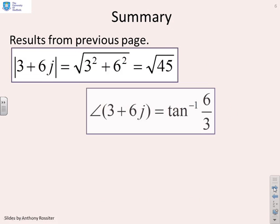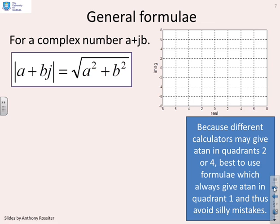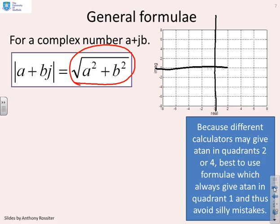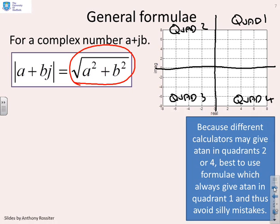That was a summary of results from the previous examples. For a general complex number a plus jb, the modulus is straightforward — just use Pythagoras: the square root of the real part squared plus the imaginary part squared. The phase is trickier. You can't just naively apply inverse tan; you need to know which quadrant the complex number lies in. There are four quadrants to consider.